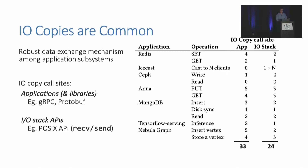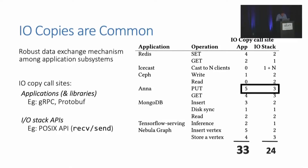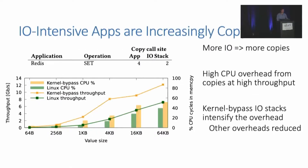We found that some operations, like put requests in a key-value store where data is read from the network and stored on disk, can induce up to eight copies of I/O data per put — five of which occur in the application and the libraries, while three occur at the I/O stack API. A more general observation is that a lot of I/O copies are being done, and application copies outnumber copies performed at the I/O stack API.